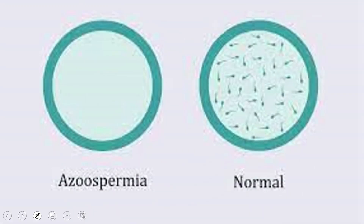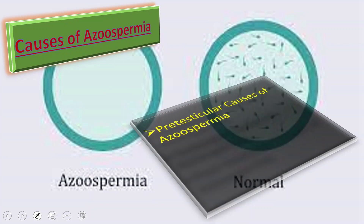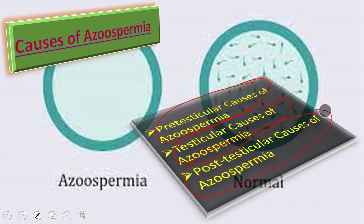What causes azoospermia? Pre-testicular causes include congenital problems like Kallmann syndrome and acquired conditions like testicular trauma, testicular tumors, and testosterone therapy. Testicular causes include chromosomal deletions or acquired conditions like previous chemotherapy and radiotherapy. Post-testicular causes include congenital problems like bilateral absence of the vas deferens, or acquired causes like diabetic neuropathy or prostatectomy.